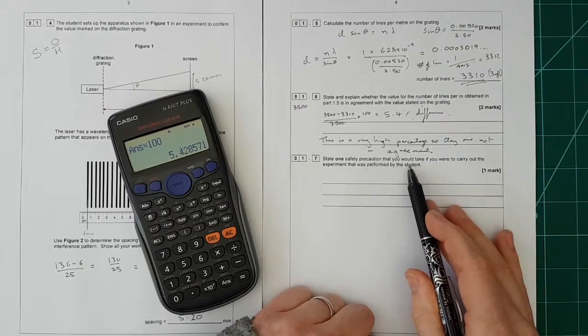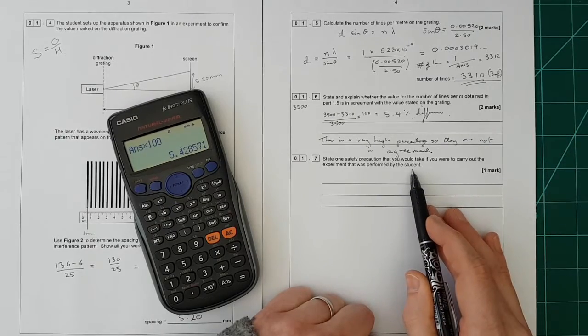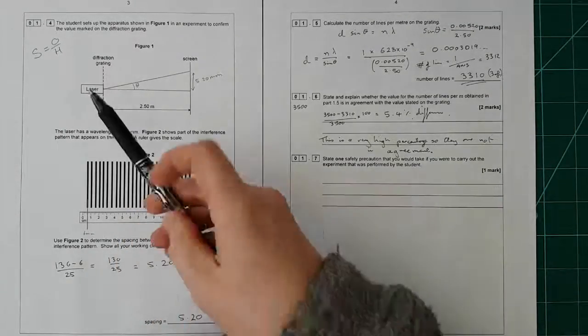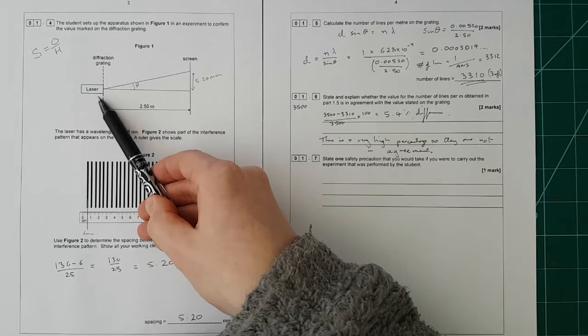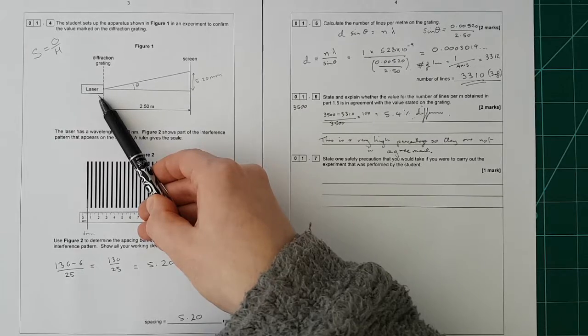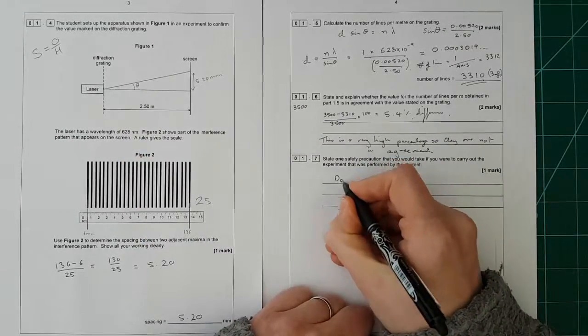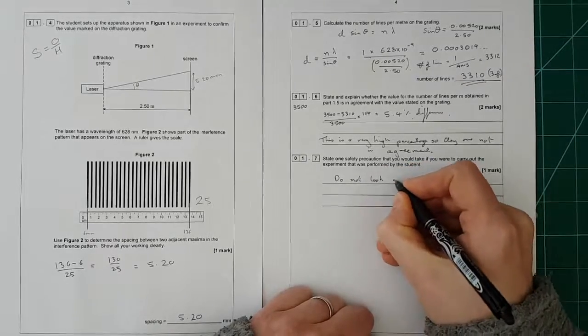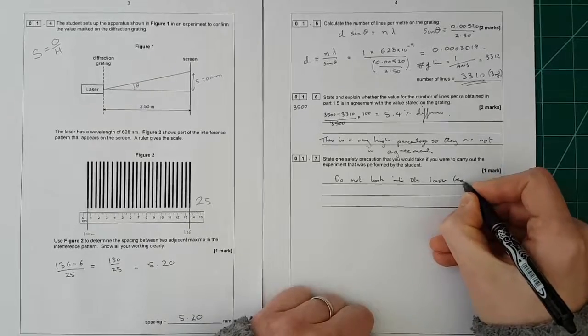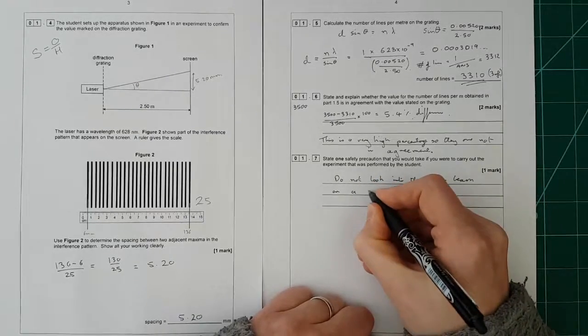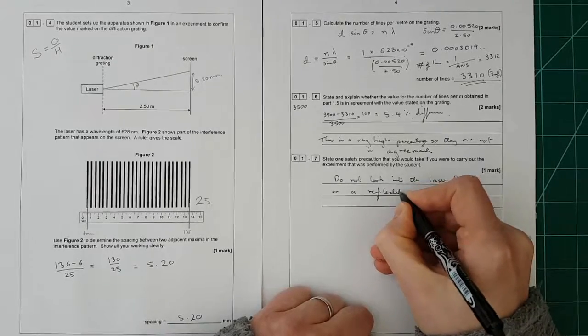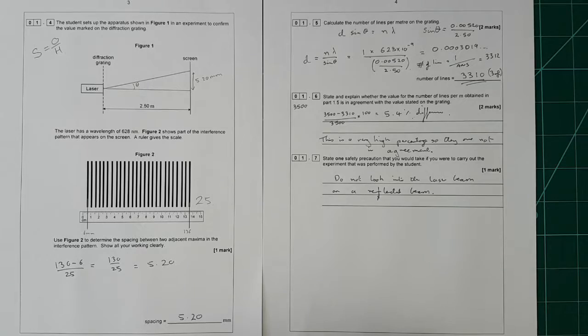State one safety precaution you would take if you were to carry out the experiment that was performed by the student. Well, this is fairly obvious. They have a laser here, so we need to write down a safety precaution which is to do with the laser. So do not look into the laser beam or a reflected beam. You could have also written something like make sure that you put a sign on the door when you're doing the experiment that a laser is in use or wear laser goggles when performing the experiment. Other things like that. Just one sensible answer is all that's needed. Right, that's the end of question one.